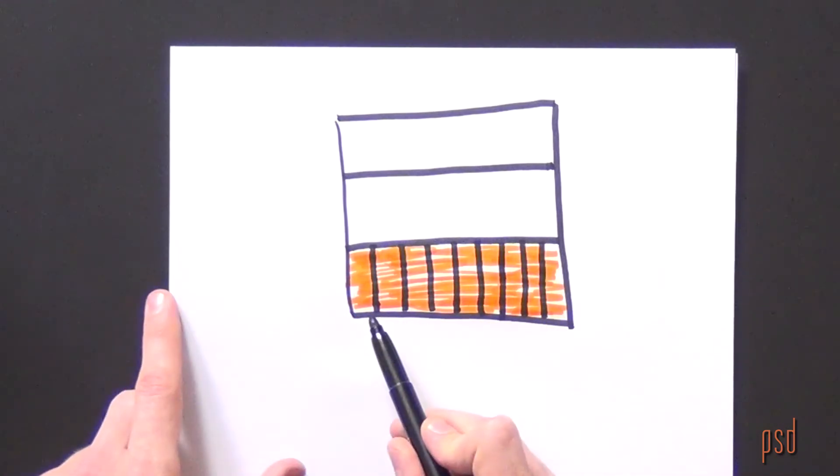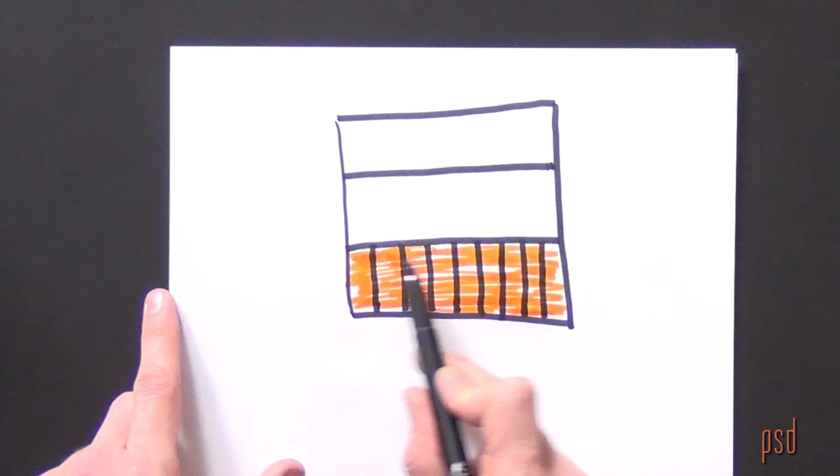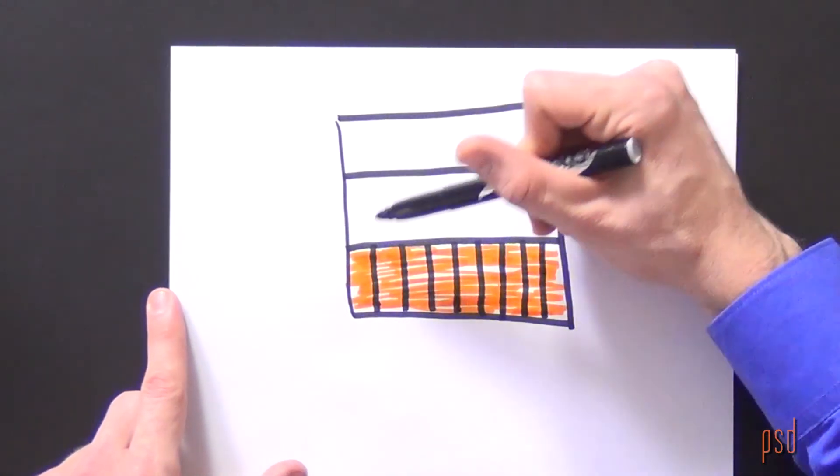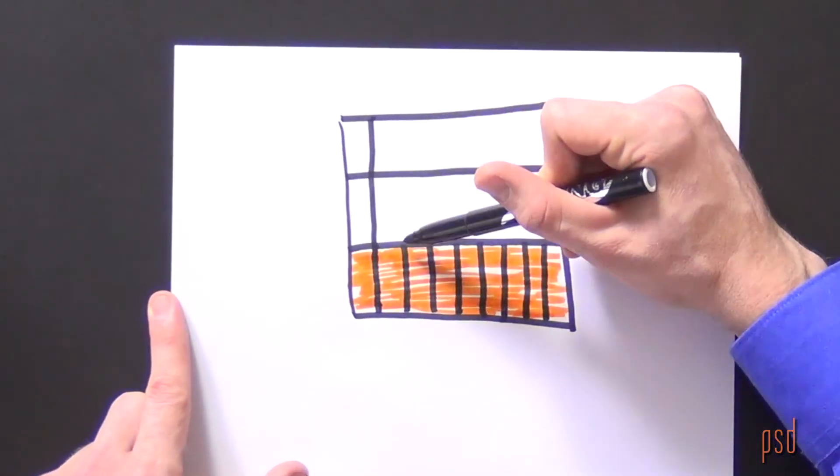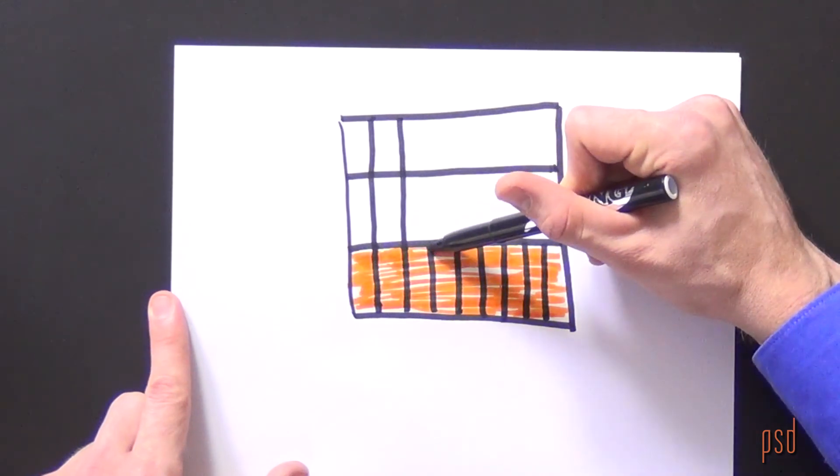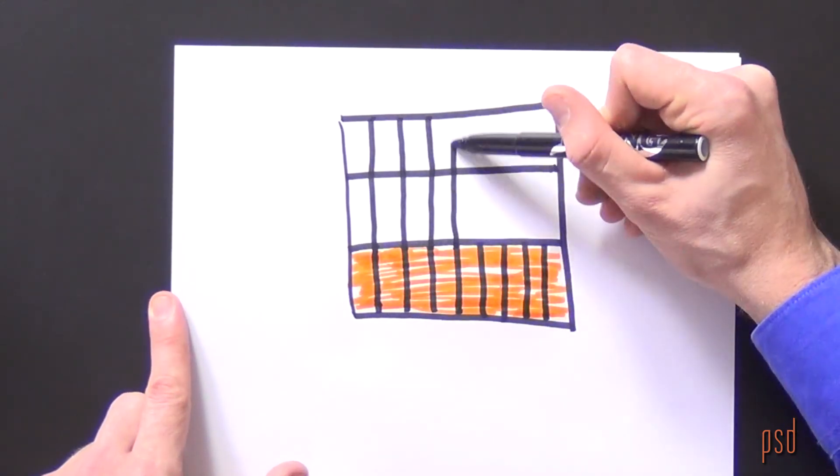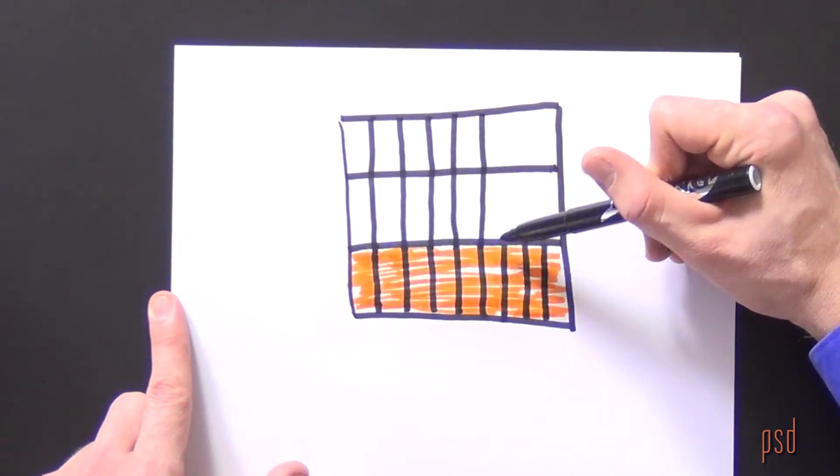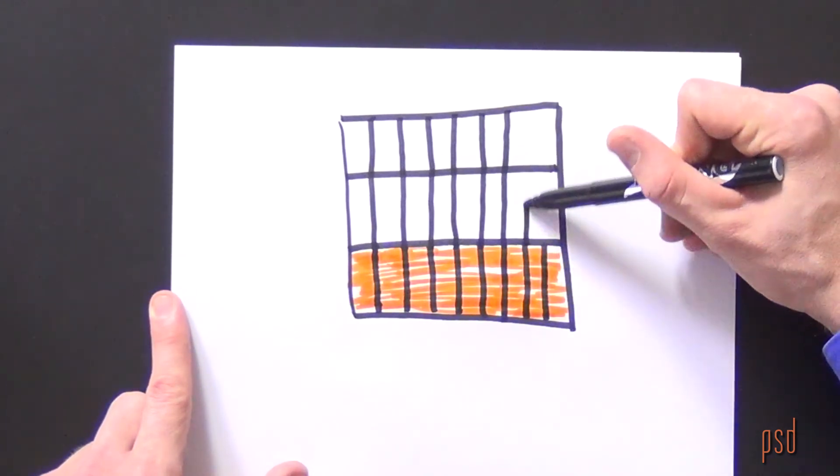Right now, I can see that each student received one-ninth of one-third of a gallon, but in order to compare the size piece that they received, I need to continue partitioning the rest of my whole in this picture.